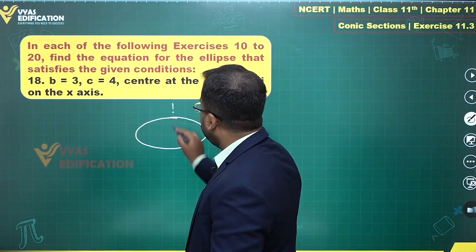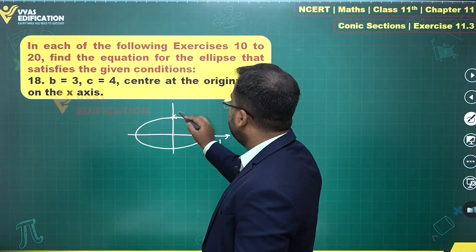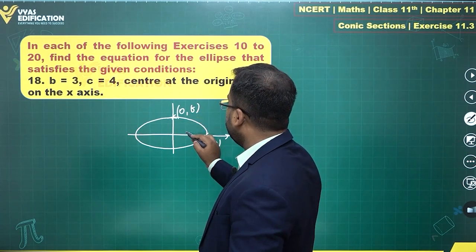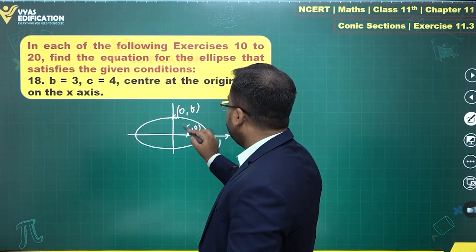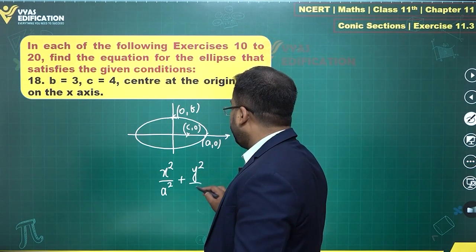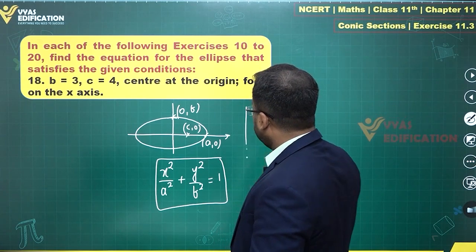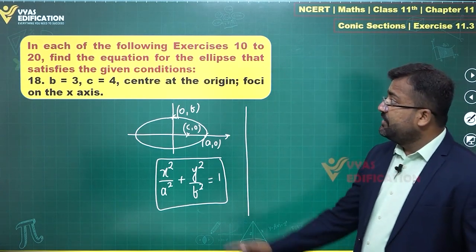Foci on the x-axis, center at the origin, implies this is a standard horizontal ellipse. This is (a, 0), (0, b), and this here is (c, 0). Equation is x square upon a square plus y square upon b square is equal to 1. And for this standard ellipse, it is given that b equals 3, c equals 4.